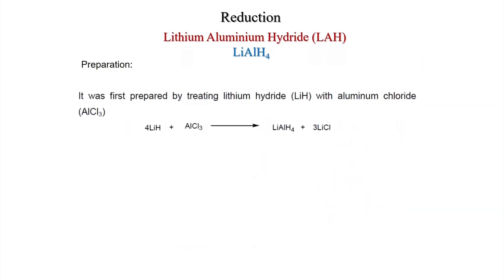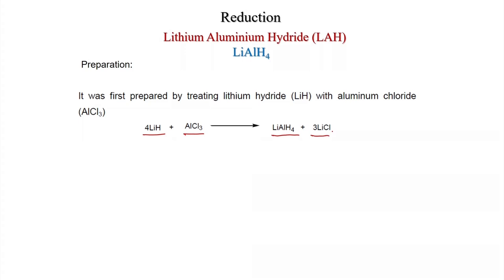LiAlH4 preparation: it was first prepared by treating 4 equivalents of lithium hydride with aluminum chloride to give LiAlH4 and 3 molecules of LiCl as byproduct. Industrially it is made from sodium aluminum hydride, which is prepared from sodium, aluminum, and hydrogen at high temperature and pressure. Sodium aluminum hydride treated with lithium chloride exchanges to give lithium aluminum hydride and sodium chloride.